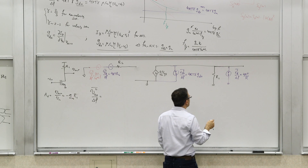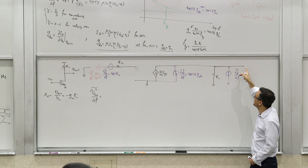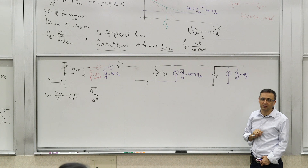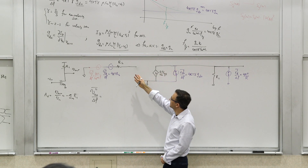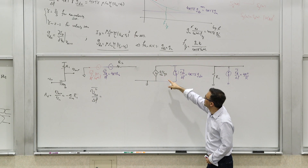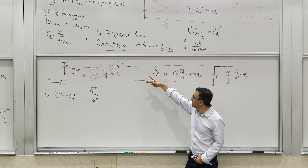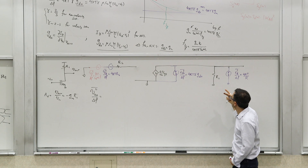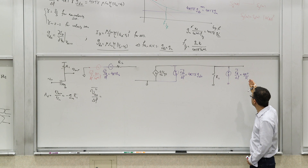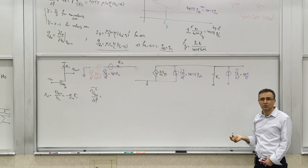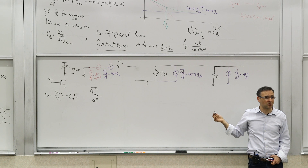Let's start from the output resistor. How does the noise of R1 appear at the output when all other independent sources are nulled? Nulling the current sources makes them open circuit; nulling the voltage sources short-circuits them. The dependent source G_M·V_GS also goes to zero because V_GS = 0. So all you have is R1 at the output, and the current noise source is injected into R1. The transfer function magnitude squared is R1².